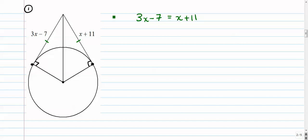To solve this, we're going to subtract x from both sides. We get 3x minus 1x is 2x, minus 7 equals 11. We'll add 7 to both sides. So we get 2x equals 18. And finally, we'll divide by 2, we get x is 9.